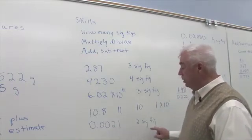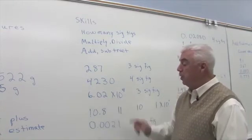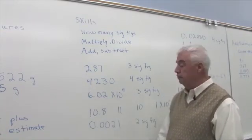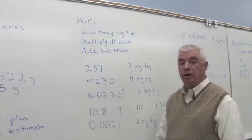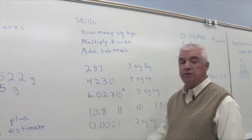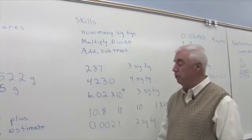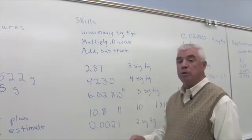If you see a number expressed in scientific notation, 6.02 times 10 to the 4th, the rules for significant figures say that only these digits, the 6, the 0, and the 2, are significant.